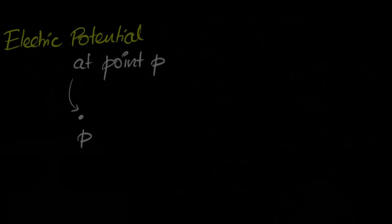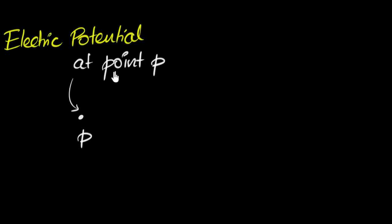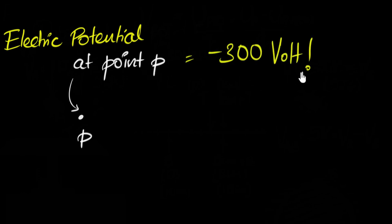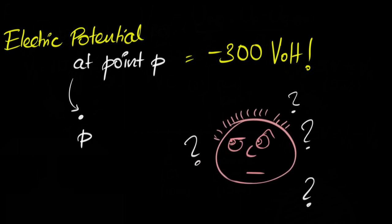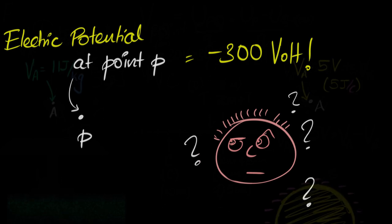Just when I thought that I understood potentials, I saw weird statements like this: electric potential at some point P equals negative 300 volts. And my brain was like, hey, what does that negative sign even mean? What does it mean to have negative energy? Well, by the end of this video, we will have a much deeper understanding of what electric potentials are, and we'll be able to understand what negative potentials mean.